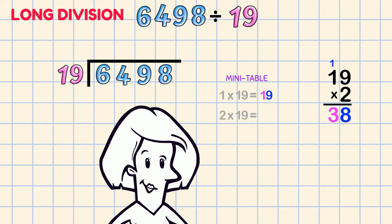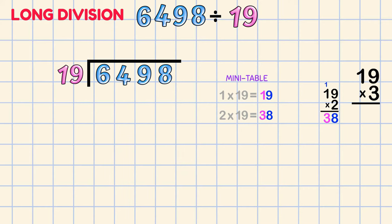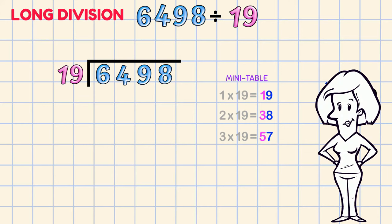Then 2 x 19 is 38. Next multiplication! 3 x 9 is 27, 3 1s are 3 plus 2 is 5, 3 x 19 is 57. Do you see the pattern emerging?